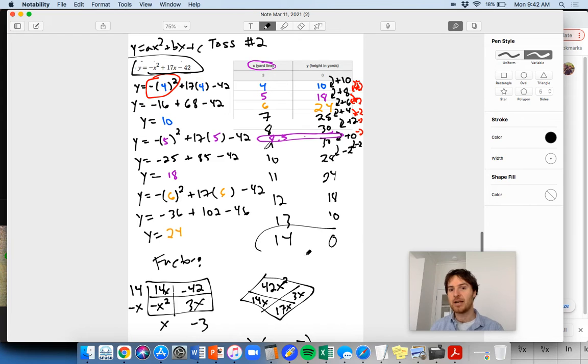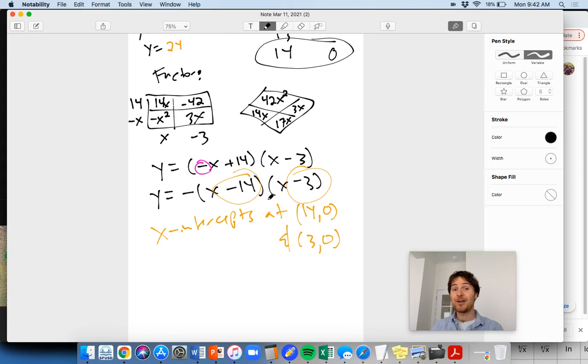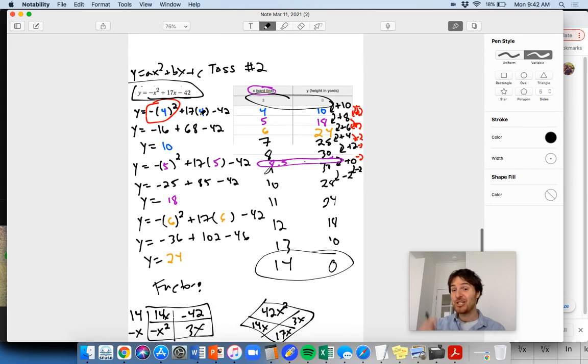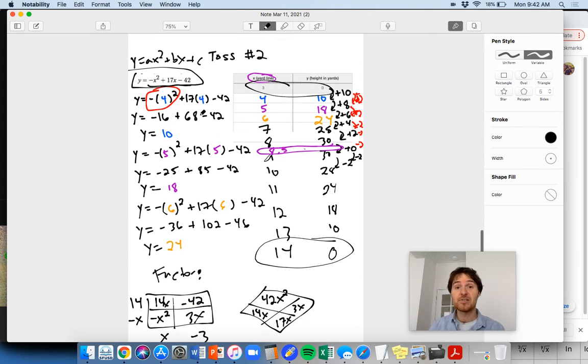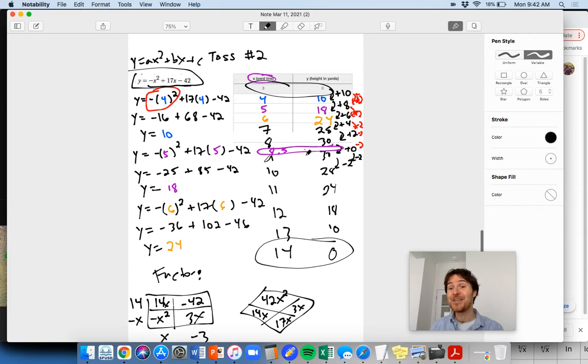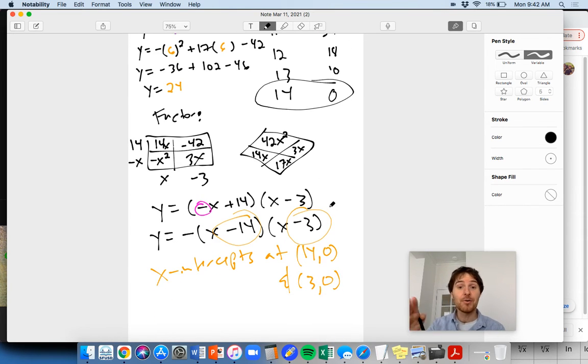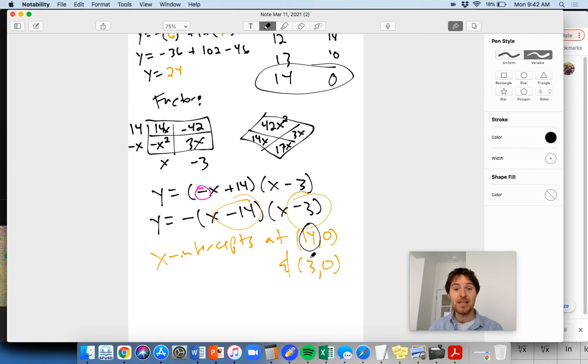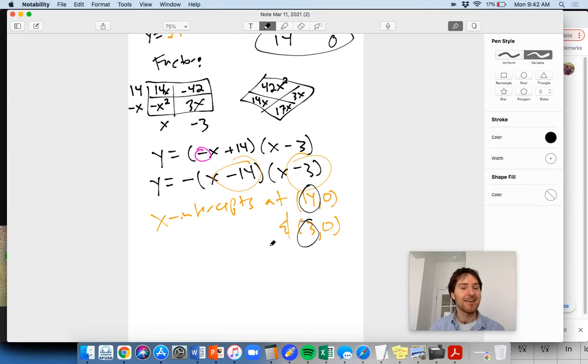So what I'm going to do is negative x plus 14, I'm going to factor out a negative one from that because x is negative one times x, and 14 is negative one times negative 14. So if I pull out that negative in front of the x plus 14, I get negative times the quantity x minus 14 times x minus three. This is a great idea to save you from this whole table right here.